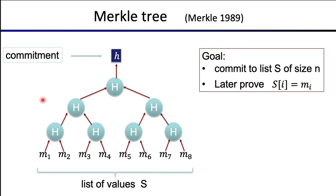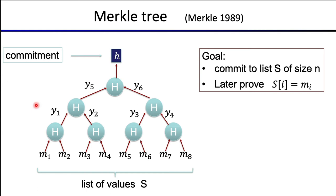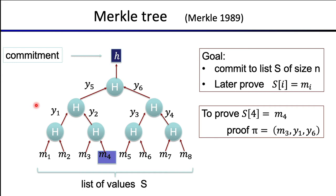A Merkle tree is a tree of hashes where we hash all bottom pairs, then hash all those hashes to get the second layer, then hash again, and finally arrive at a single hash — the final commitment sent to Bob. We'll call the internal hash values y1, y2, up to y6. Suppose we want to prove that s4 equals m4 — opening the fourth element and proving that m4 really is what we committed to at position four.